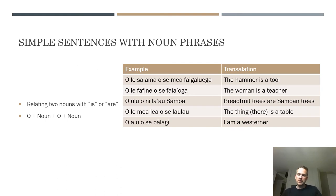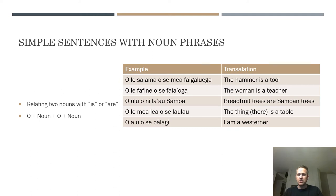With that background, now that we have the particle 'o,' articles, and some nouns, we can put it all together to create simple sentences. The sentence structure is: o + noun phrase, then o + second noun phrase — where each noun phrase is article + noun. For example, 'ole salama o se mea fai galuega' means 'the hammer is a tool.' Salama is hammer and mea fai galuega is tool — literally 'thing you do work with.' That's a complete sentence in Samoan, and we're really just smashing two noun phrases together.